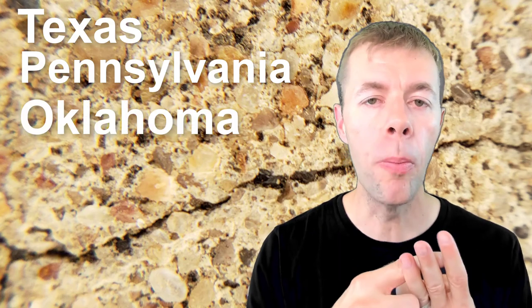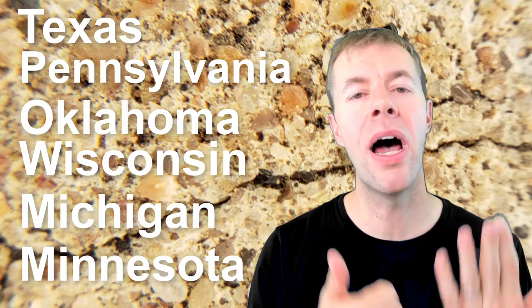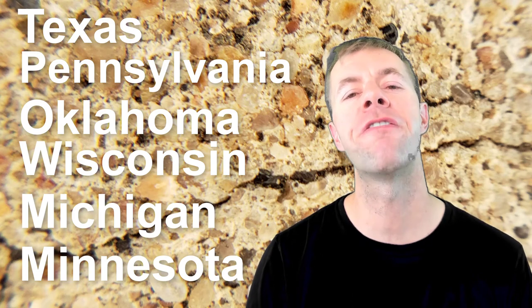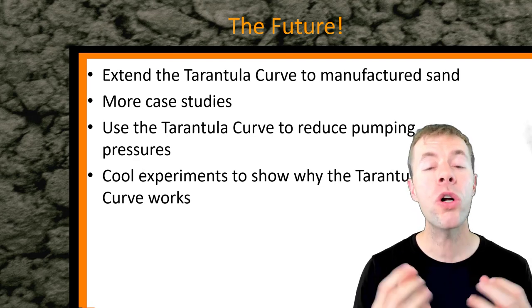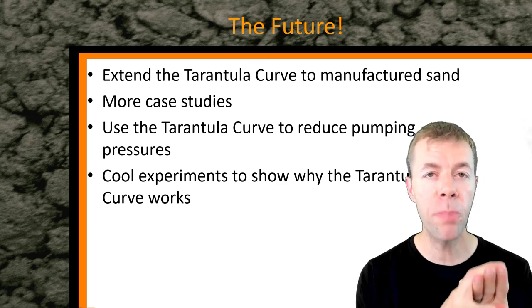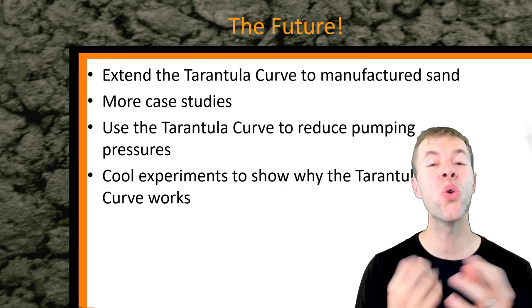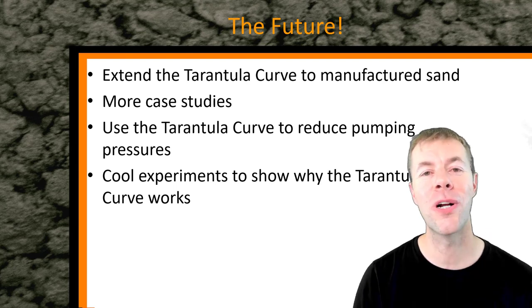In summary, contractors and owners are successfully using the tarantula curve to design their concrete mixtures. This is why DOTs in Texas, Pennsylvania, Oklahoma, Wisconsin, Michigan, and Minnesota have all started to specify the tarantula curve in their concrete mixtures, and why I get emails from contractors and producers all over the world having great success with it. Looking ahead, we're working to extend the tarantula curve to better understand manufactured sands, including more case studies, using it to reduce pumping pressures, and doing experiments to explain why the tarantula curve works.